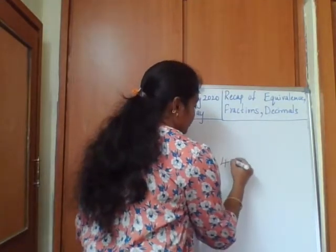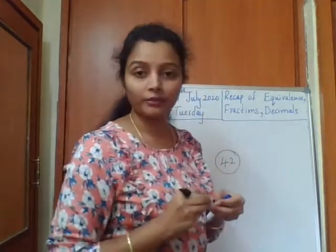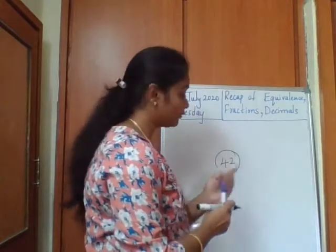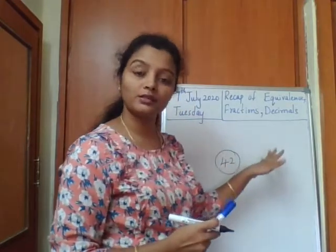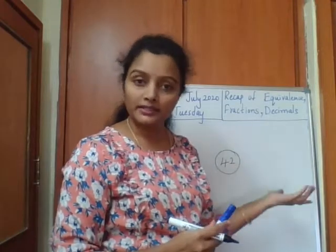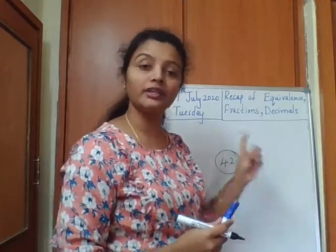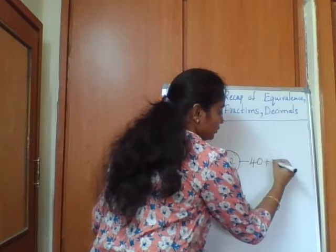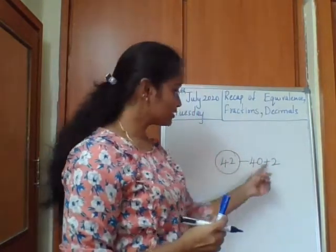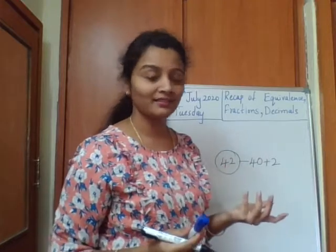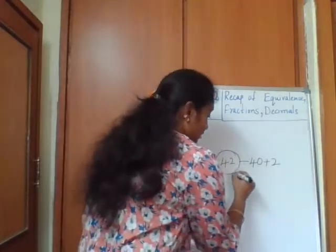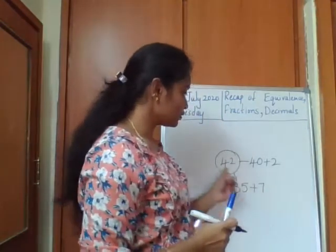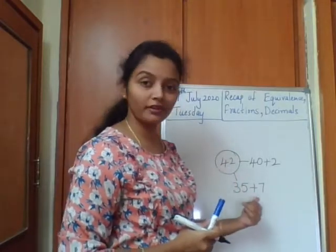One important thing to remember: you have to balance both sides. Here is 42. If I represent this number using other smaller numbers or symbols, I must make sure it equals 42. For example, 40 plus 2 is 42 — I used different numbers but they equal this. I can also write 35 plus 7, which is also 42.